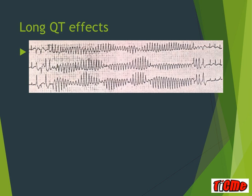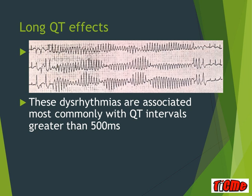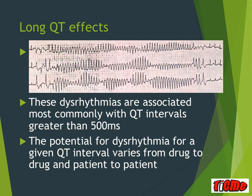Here's the classic ECG of someone with a long QT who flicks in and thankfully out of torsades. Generally, you don't get torsade unless the QT absolute is greater than 500 milliseconds. It is important to note, however, that your chance of having an arrhythmia for a given QT length varies significantly, depending on the drug taken and the patient.